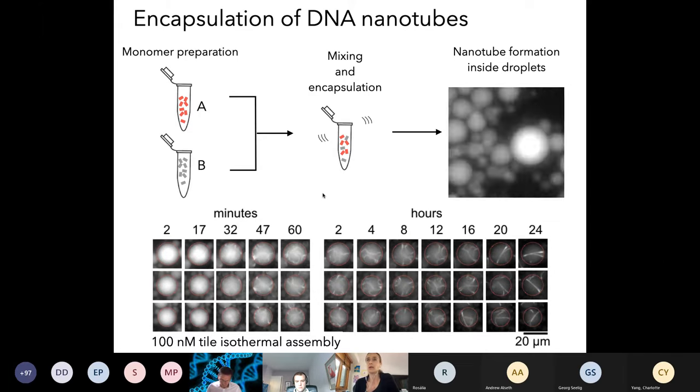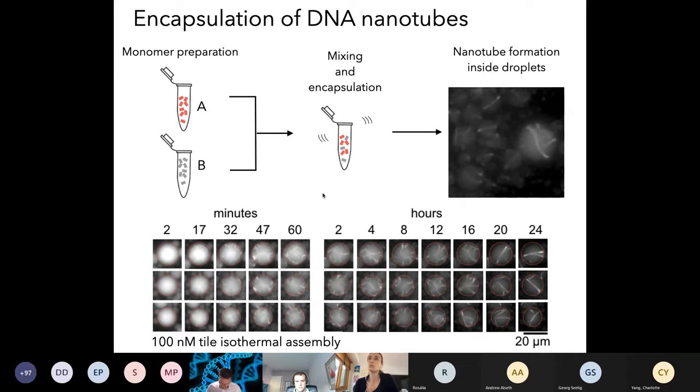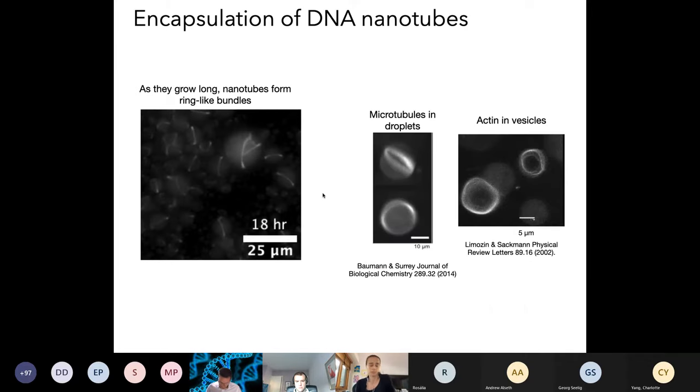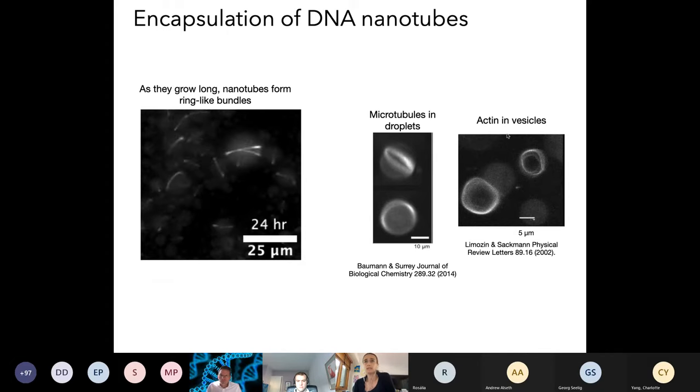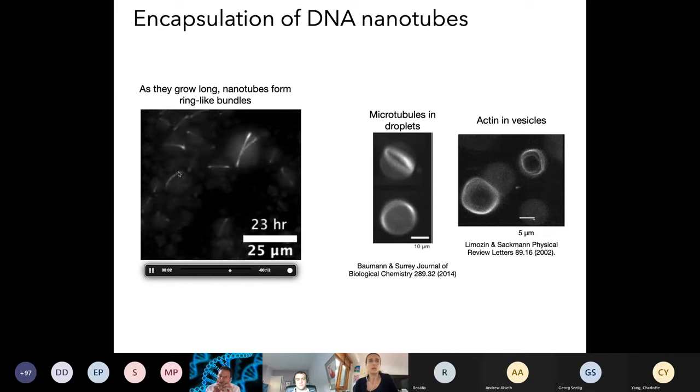The fact that we observe rings may be surprising, but it's actually not too strange. Other types of biological filaments have the same behavior. Here I'm just showing you a snapshot of the last hours of the movie that I was showing in the previous slide. You can see in some of the droplets that, by the way they move, these are really rings. Microtubules in droplets and actin in vesicles were observed to form rings as well. There's actually a whole series of modeling papers that show how this ring formation is a behavior associated to many types of soft polymers.